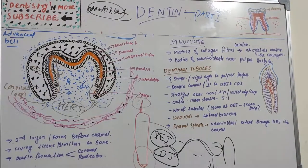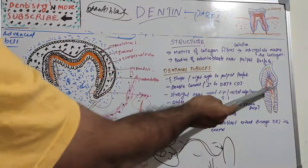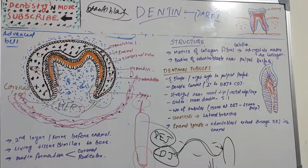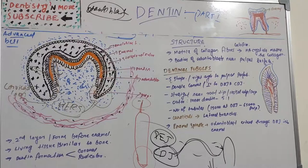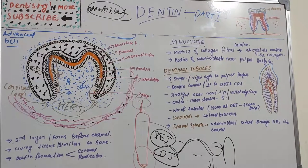The dentinal tubules have lateral branches through the dentine, termed canaliculi or micro-tubules. The enamel spindle refers to the odontoblastic process which extends through the DEJ into the enamel by several millimeters. It is not actually an enamel structure but a dentine-related structure — an odontoblastic process that enters through the DEJ and terminates within the enamel.